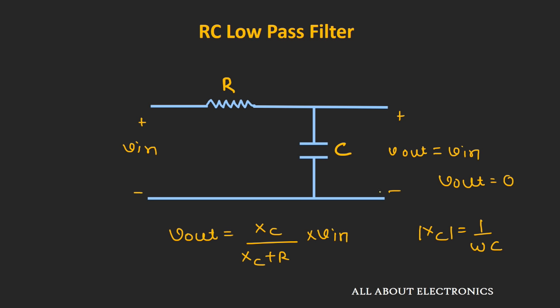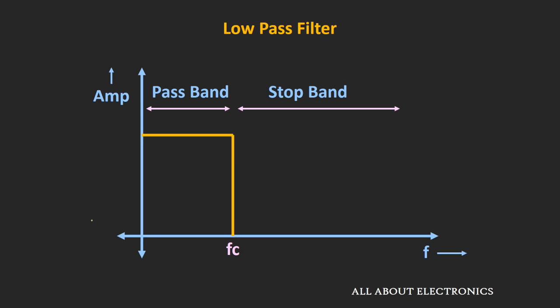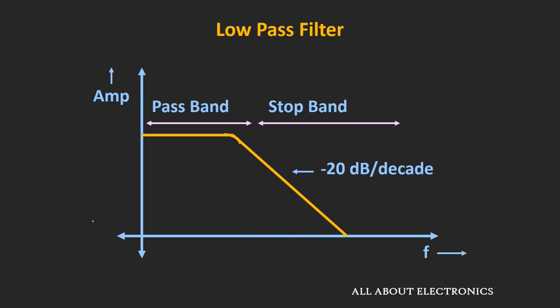This circuit passes the low-frequency components in the input signal and rejects or attenuates higher-frequency components. Earlier we saw the frequency response of an ideal low-pass filter, but the actual response looks different. At lower frequencies, this filter provides zero or minimum attenuation, and as the frequency increases, the attenuation also increases.